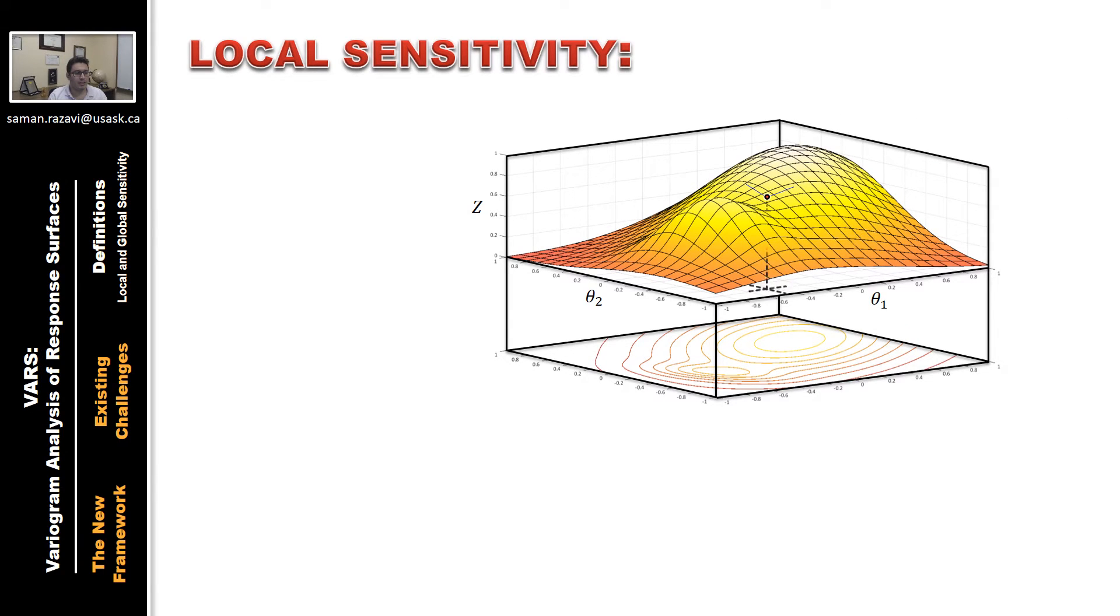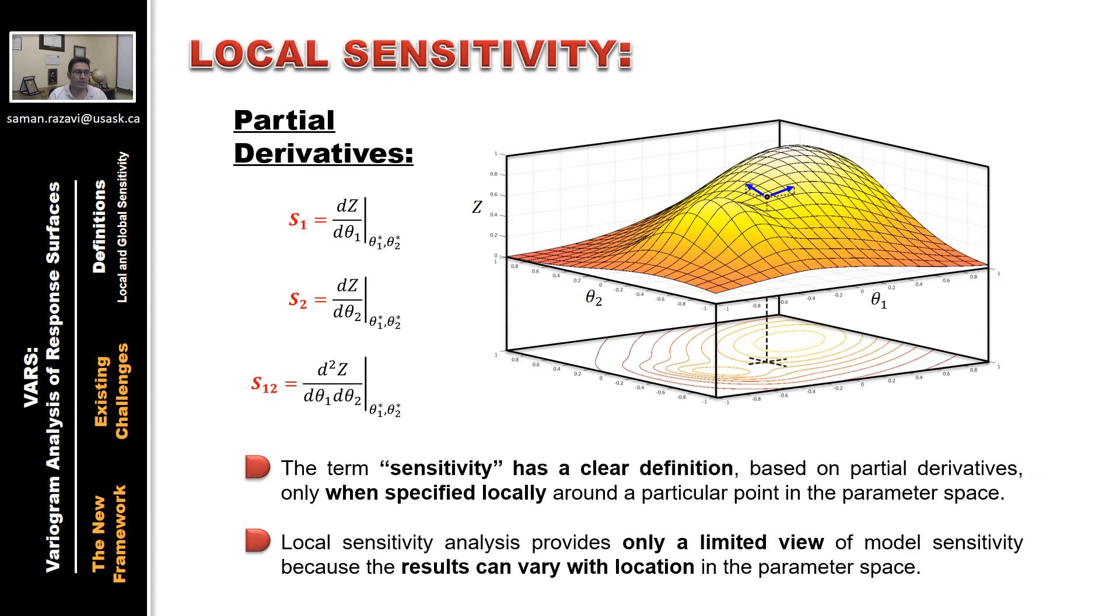But sensitivity has a clear definition based in partial derivatives only when specified locally, around a nominal point in the parameter space. Obviously, such local sensitivity analysis provides only a limited view of the response surface. And it varies for different locations.